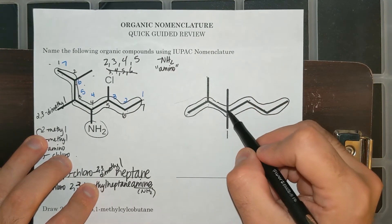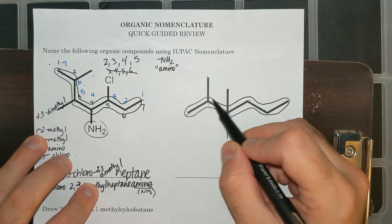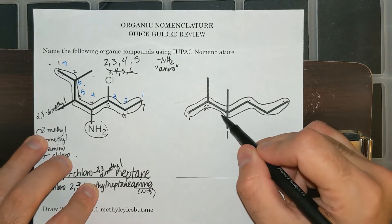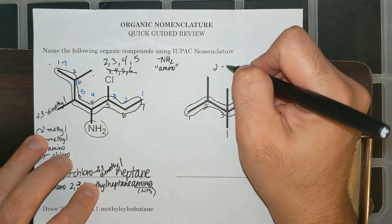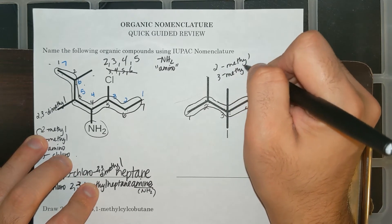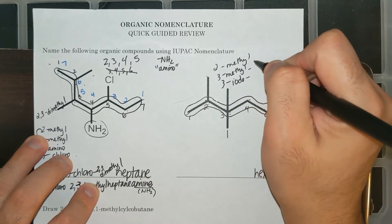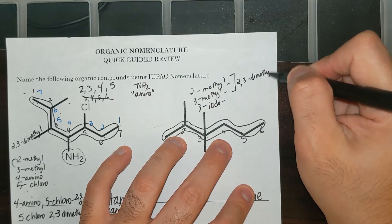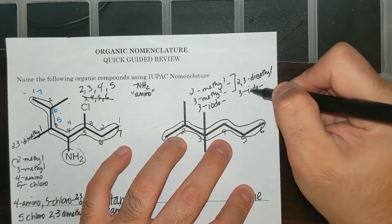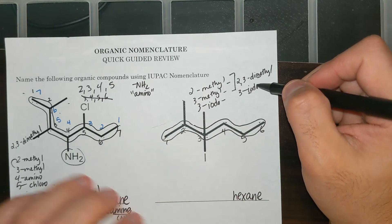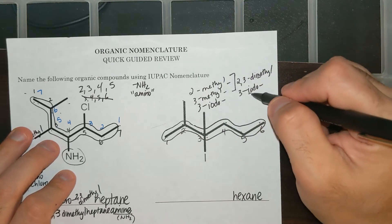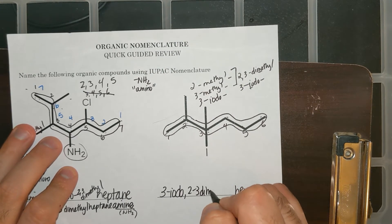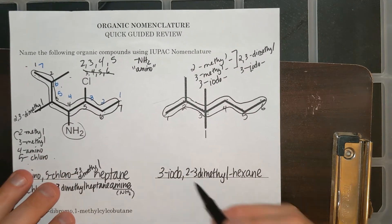Obviously the best and lowest numbers are going to come from numbering left to right. On the second carbon, I have a methyl. On the third carbon, I have a methyl. On the third carbon, I also have an iodine, which we call iodo. So I have 2,3-dimethyl as we saw in the previous problem. Remember, Greek prefixes do not come into play with alphabetizing the name. So I have I versus M — iodo goes first. This becomes 3-iodo-2,3-dimethylhexane. That will be the name of this compound.